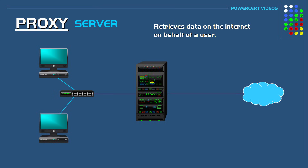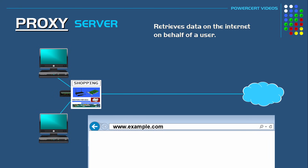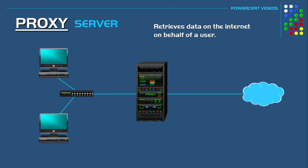Normally when a computer wants to view a web page out on the internet, you would just open up a web browser, type in the address, and retrieve that web page from its web server. When you go through a proxy server, the proxy server will act like a middleman and will retrieve that web page for you.